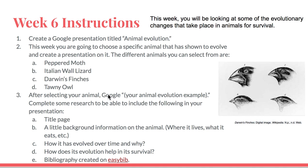After selecting your animal, complete a little bit of research to include in your presentation. Make sure you have a title page and a little background information on the animal — so where it lives, what it eats, etc. — which you can find through any encyclopedic source. Make sure to talk about how some people believe it has evolved over time and why. That's not necessarily what you believe, but what the concept of evolution is telling us. How does it evolve, or how does evolution help in its survival — so why did it so-called evolve? And lastly, make sure that you have a bibliography created on EasyBib of your sources.